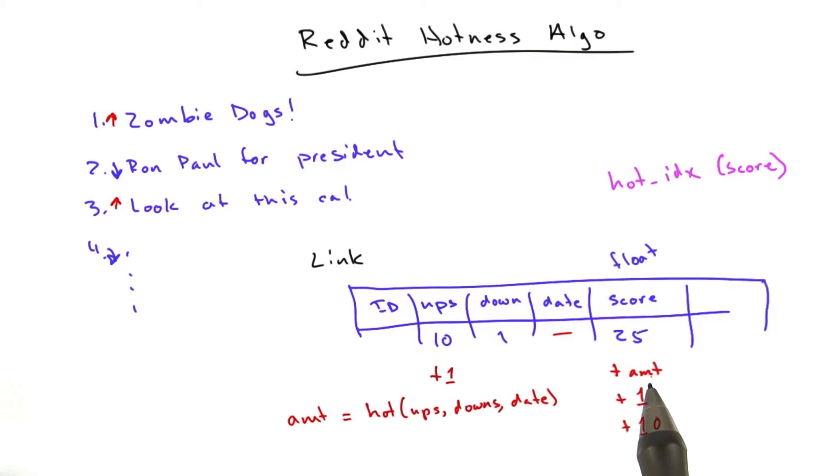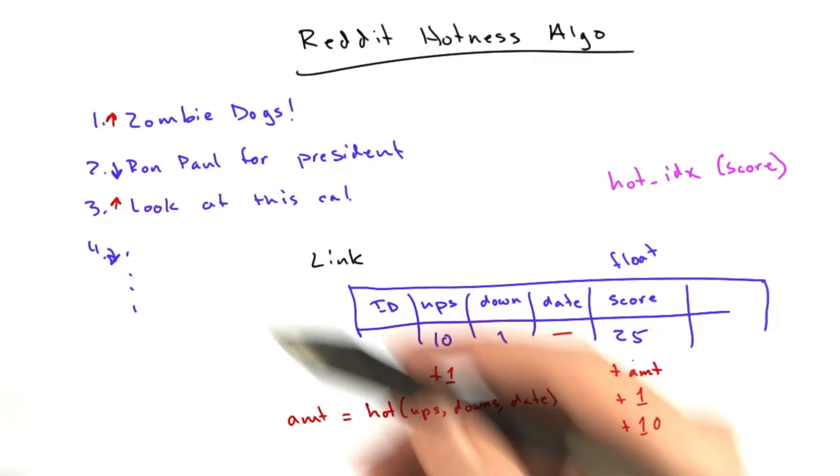So a link that's one day old with lots of votes has the same popularity as a link that's one minute old with just a few votes. And that's what keeps our front page churning.